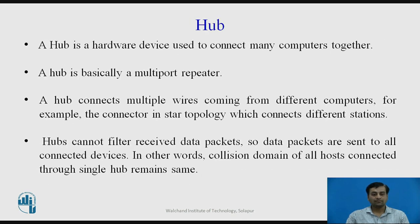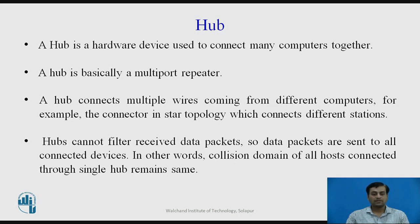The second networking device is the hub. A hub is a hardware device used to connect many computers together. While repeaters connect two devices only, a hub is basically a multi-port repeater. A hub connects multiple wires coming from different stations — in star topology, the centralized connector is an example of a hub. Hubs also cannot filter received data, so data packets are sent to all connected devices.